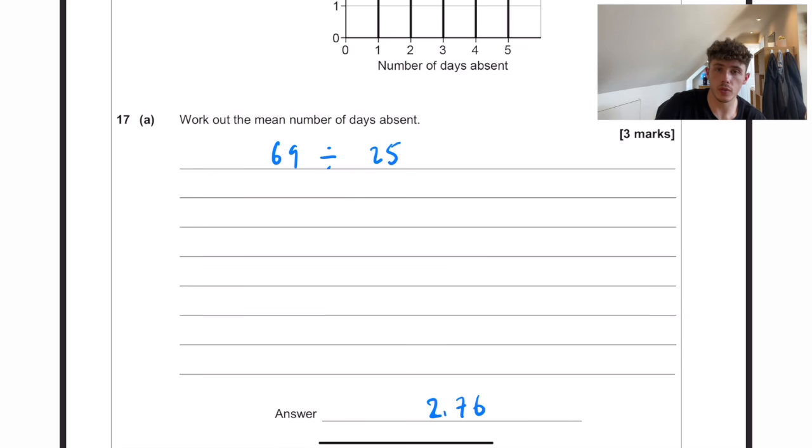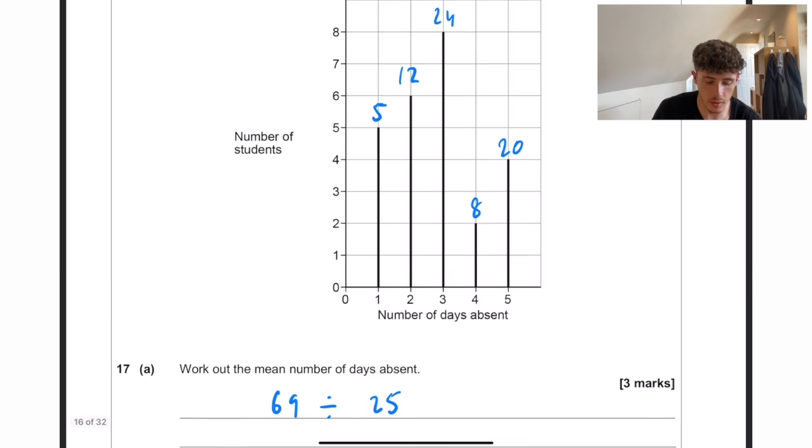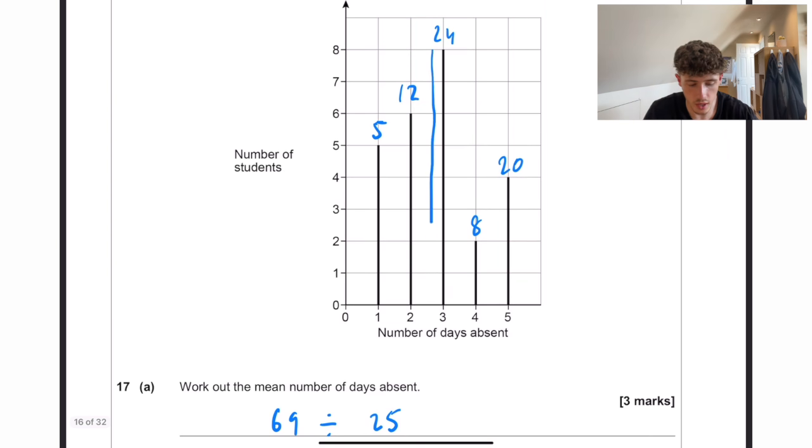And that comes out to 2.76 days per student. Always double check with your means. Just make sure the mean makes sense, because 2.76 comes roughly around here, and as you can see, most of the data is centred around that point anyway, so that's really good.